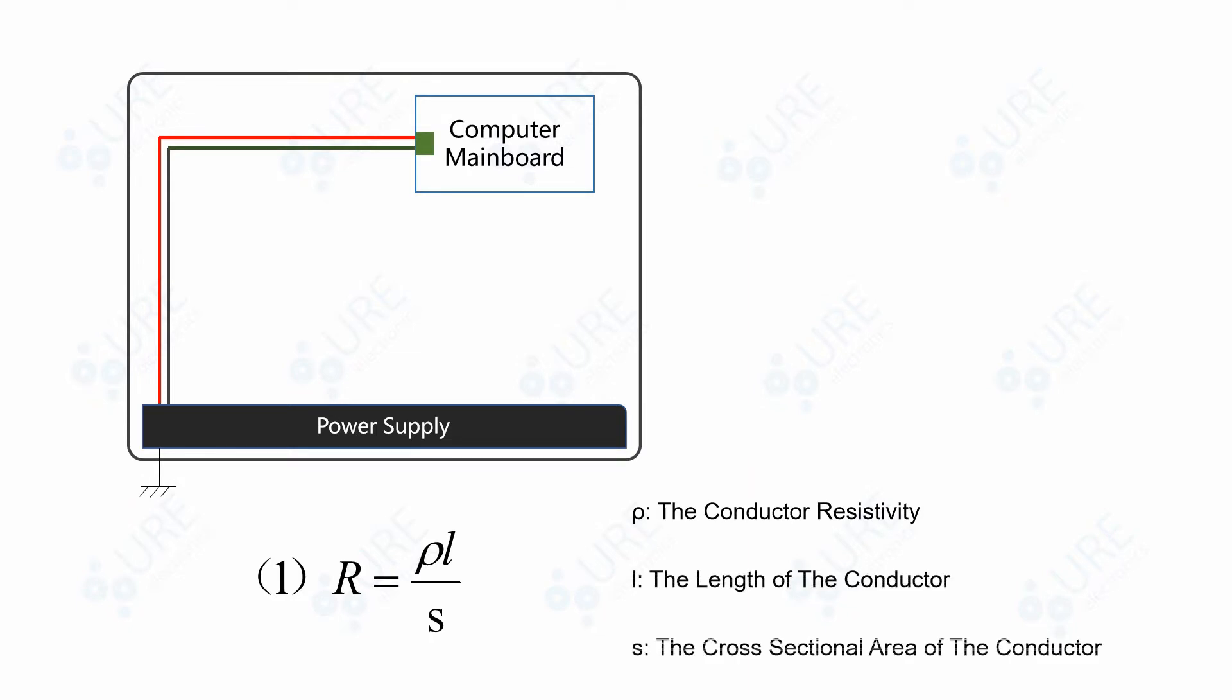Here is a diagram of the audio system used in game machines or self-service equipment. The power supply in the computer host will power the main board through cables. There will definitely be internal resistance in the cable and this can be calculated according to equation 1. Rho is the conductor resistivity, L is the length of the conductor, and S is the cross-sectional area of the conductor.